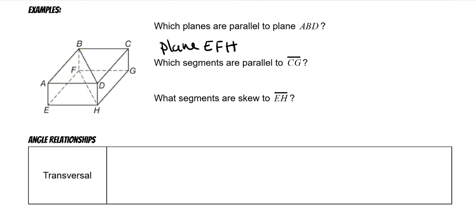The next question is: which segments are parallel to CG? CG is here. Parallel has to be on the same plane, remember? So DH is on the same plane using this side of the box, and BF is on the same plane using this side of the box. A lot of students would think EA would also be parallel, but it's not because it's not on the same plane as CG. So it's only BF and DH.